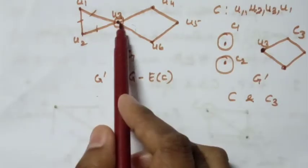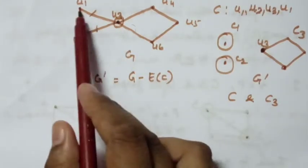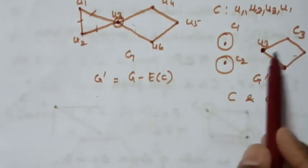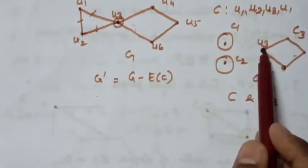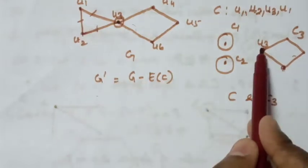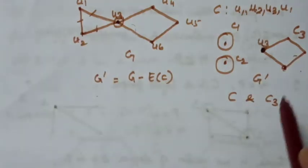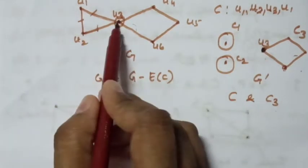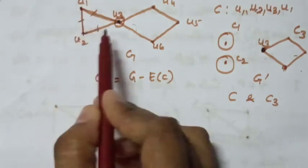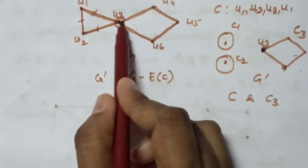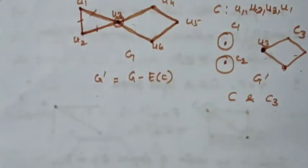We already have a trail — a closed trail, that is a cycle. A closed Eulerian trail exists. For example, the Eulerian trail goes: U1, U2, U3, U6, U5, U4, and back to U3. So it becomes a closed Eulerian trail.